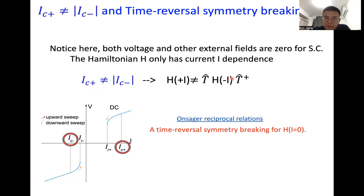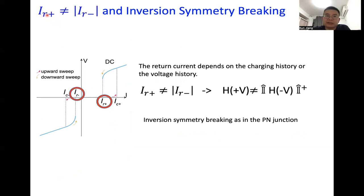Due to this Onsager reciprocal relation, we can immediately conclude that the non-reciprocal critical current implies time-reversal symmetry breaking in the Hamiltonian at zero current. There is also another phenomenon: the return current in the positive and negative directions are not equal. The return current clearly depends on the charging or voltage history, and these voltage-controlled quantities depend on inversion symmetry breaking — meaning the Hamiltonian in positive voltage is not equal to that in negative voltage under the inversion operator, as we found in the PN junction.